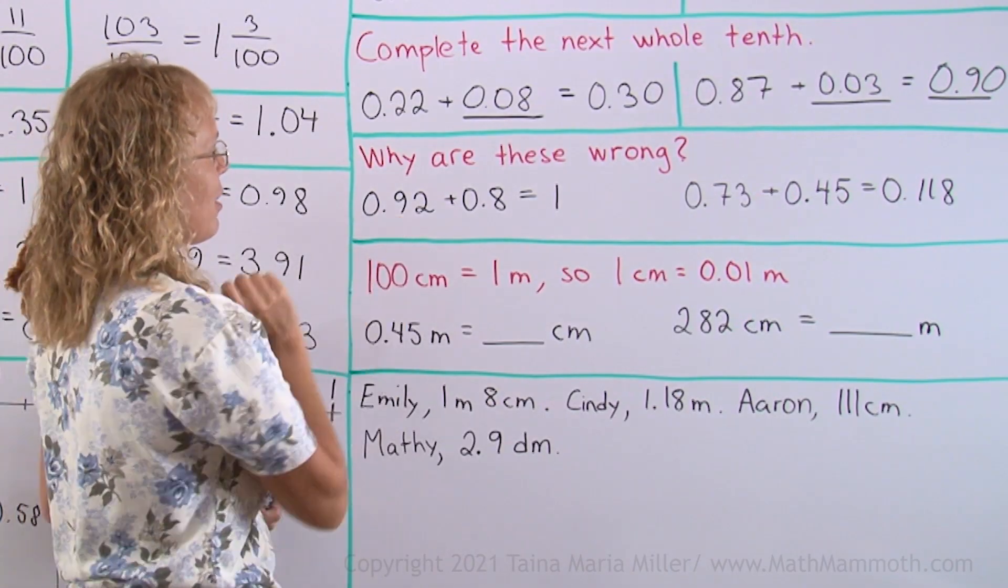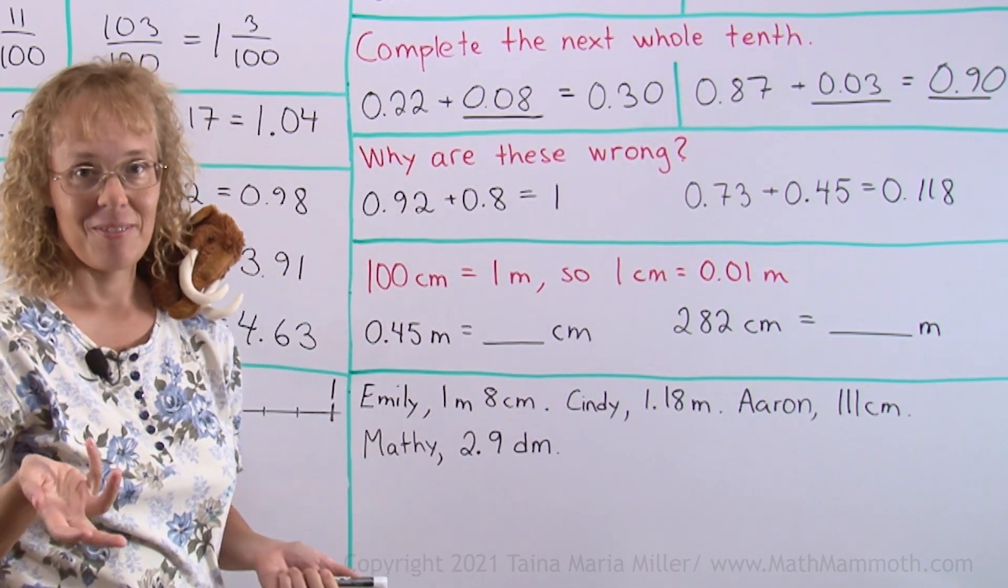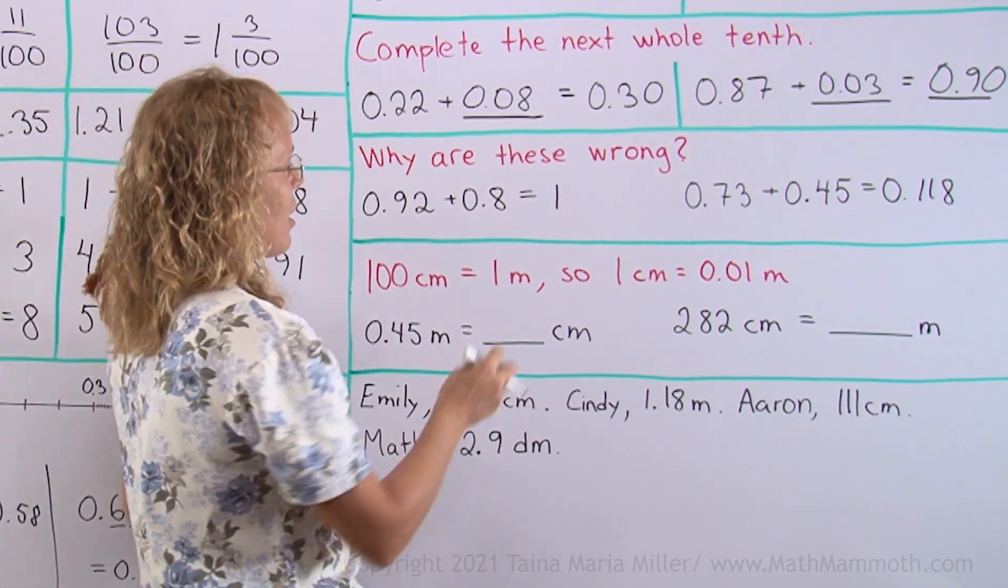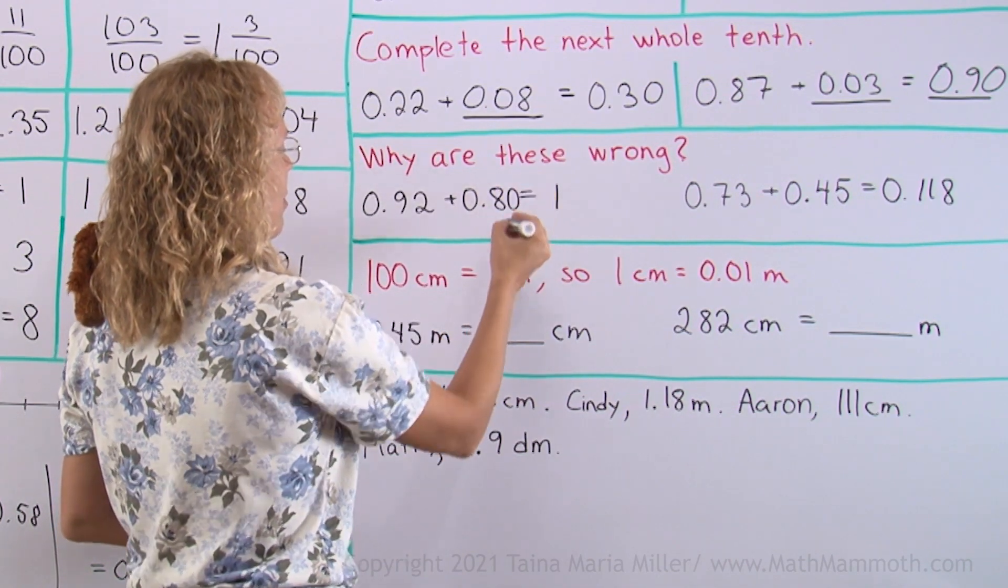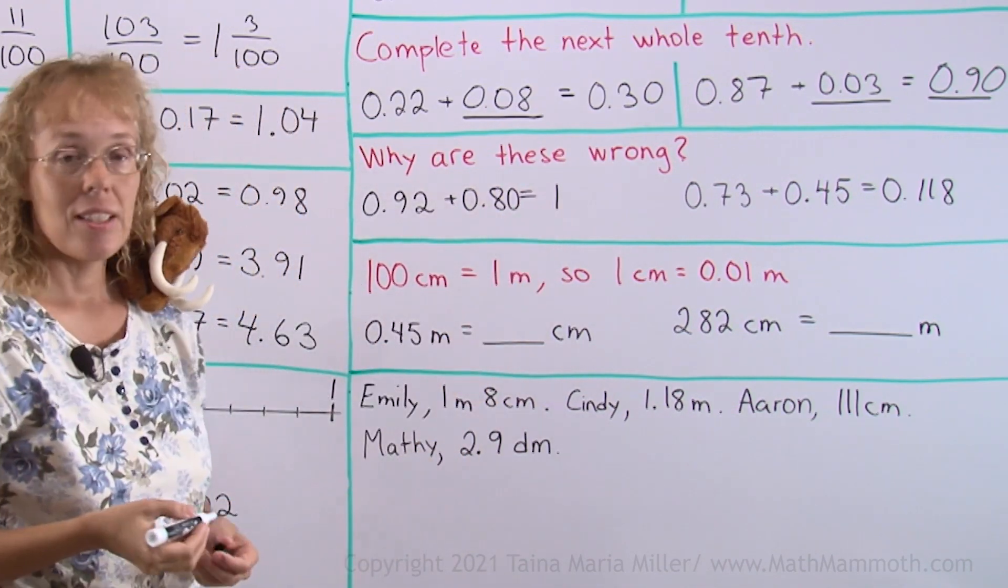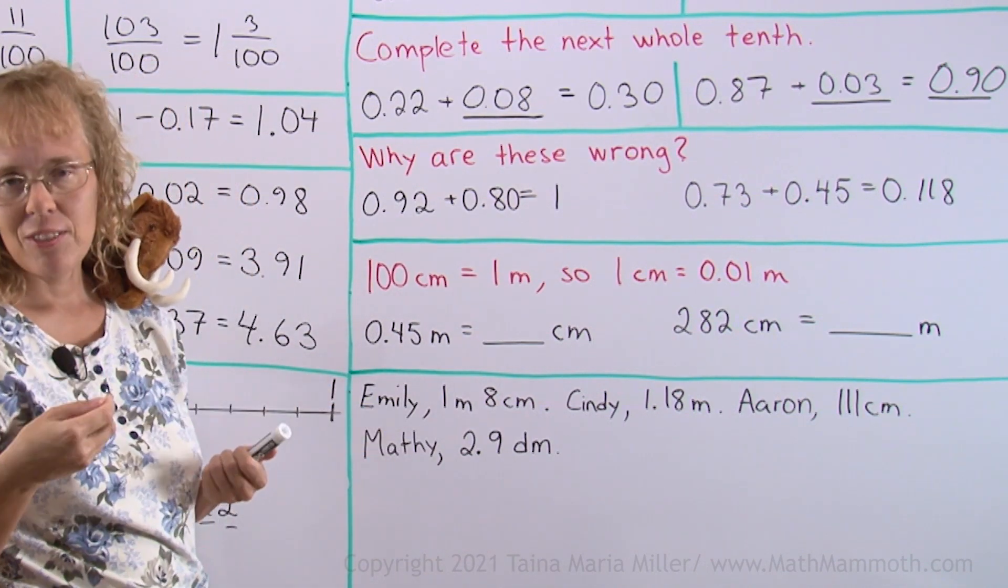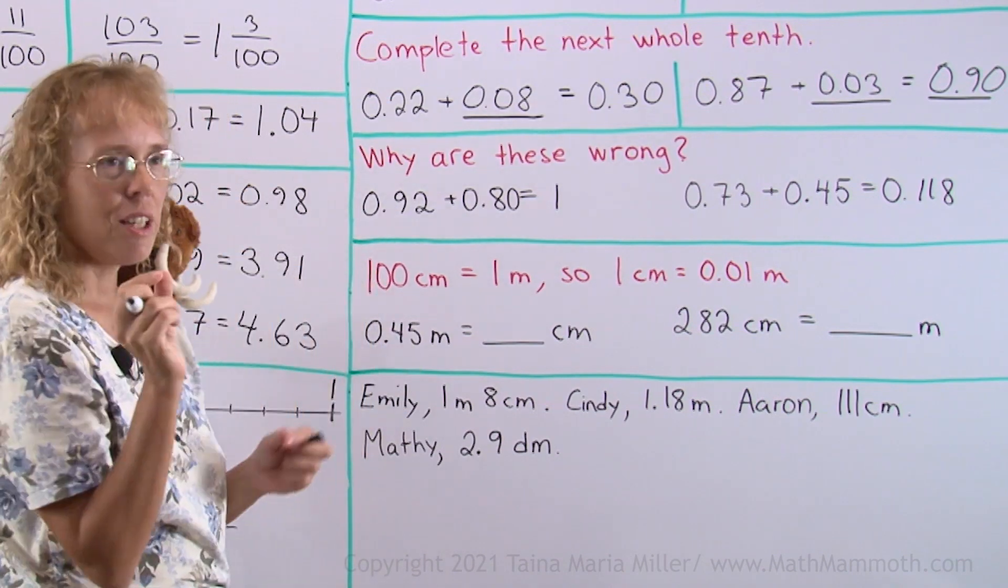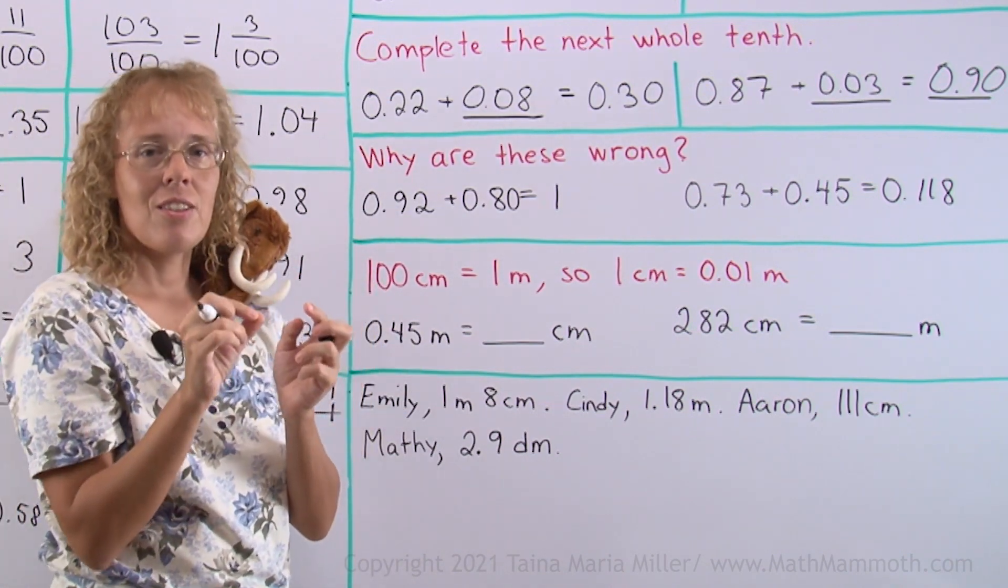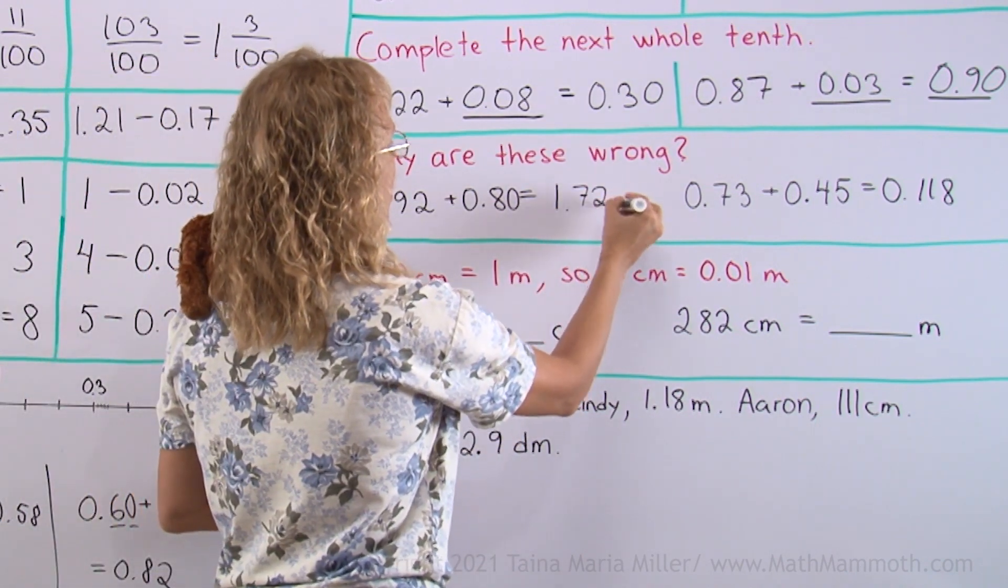Now, the first one, I think the person added 92 plus 8 equals 100, so that's why they got it. But, if we have, if we take a zero here, we will see that it's actually 80 hundredths and 92 hundredths. That would make 172 hundredths, okay. 172 hundredths, so I have 100 hundredths and 72 hundredths, so it becomes 1 and 72 hundredths.